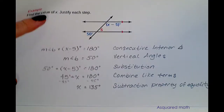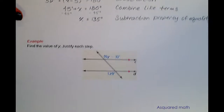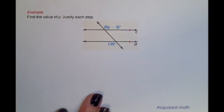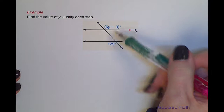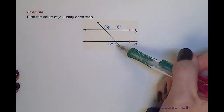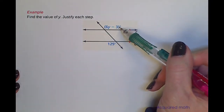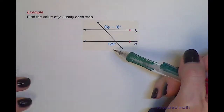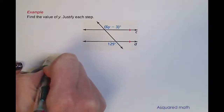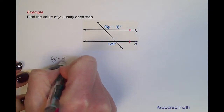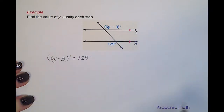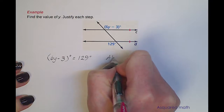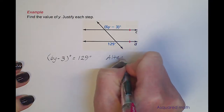One more example — we're going to find the value of y. In this case we are given two alternate exterior angles, and based on the alternate exterior angles theorem, these are congruent, so we can set them equal to each other. That gives us 6y minus 3 degrees equals 129 degrees, and we can say that because of the alternate exterior angles theorem.